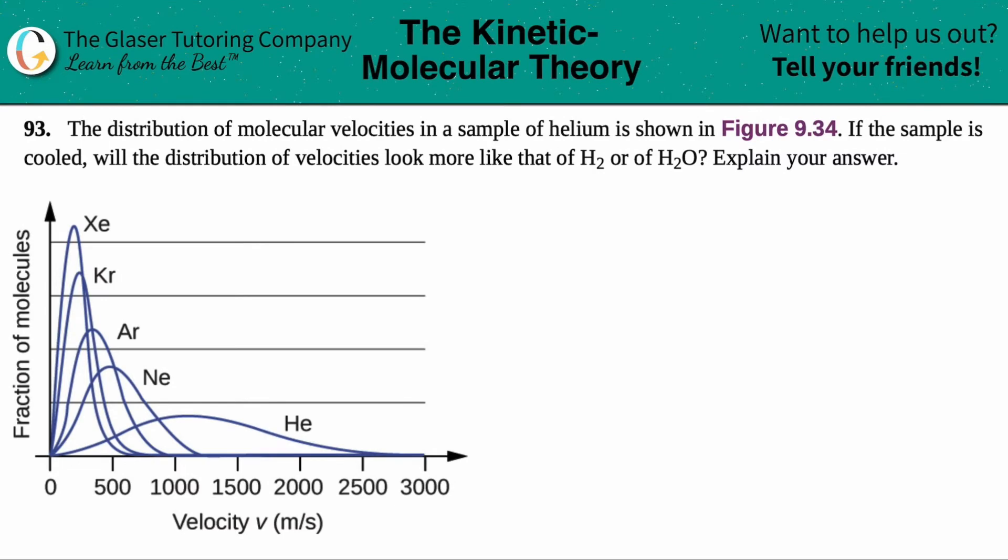Number 93: The distribution of molecular velocities in a sample of helium is shown in Figure 9.34. If the sample is cooled, will the distribution of velocities look more like that of H2 or of H2O? Then explain your answer.